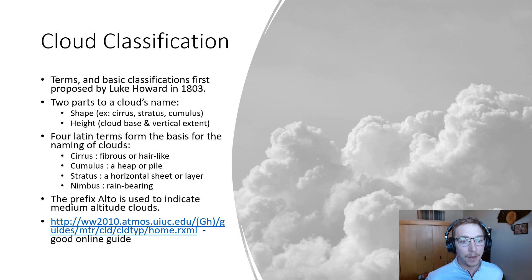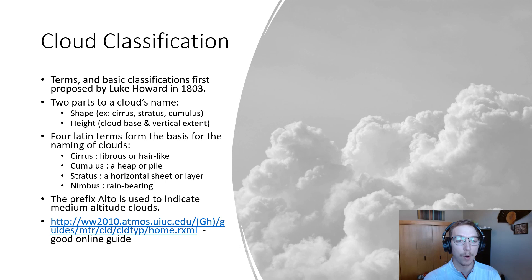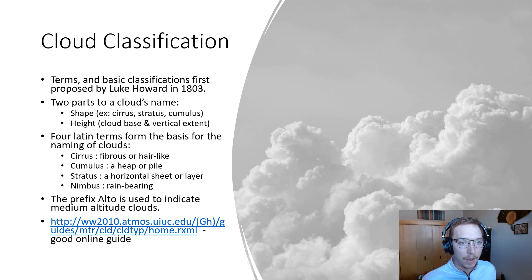Cloud classification has really been around since 1803, from a gentleman by the name of Luke Howard. The terms and basic classification he proposed are really still how we do it today. There are two parts to a cloud's name: its shape — for example, cirrus, stratus, or cumulus — and its height, meaning the cloud base and vertical extent. There are four Latin terms that form the basis: cirrus (fibrous or hair-like), cumulus (a heap or pile), stratus (a horizontal sheet or layer), and nimbus (rain-bearing). We also use the prefix alto to indicate medium-altitude clouds.